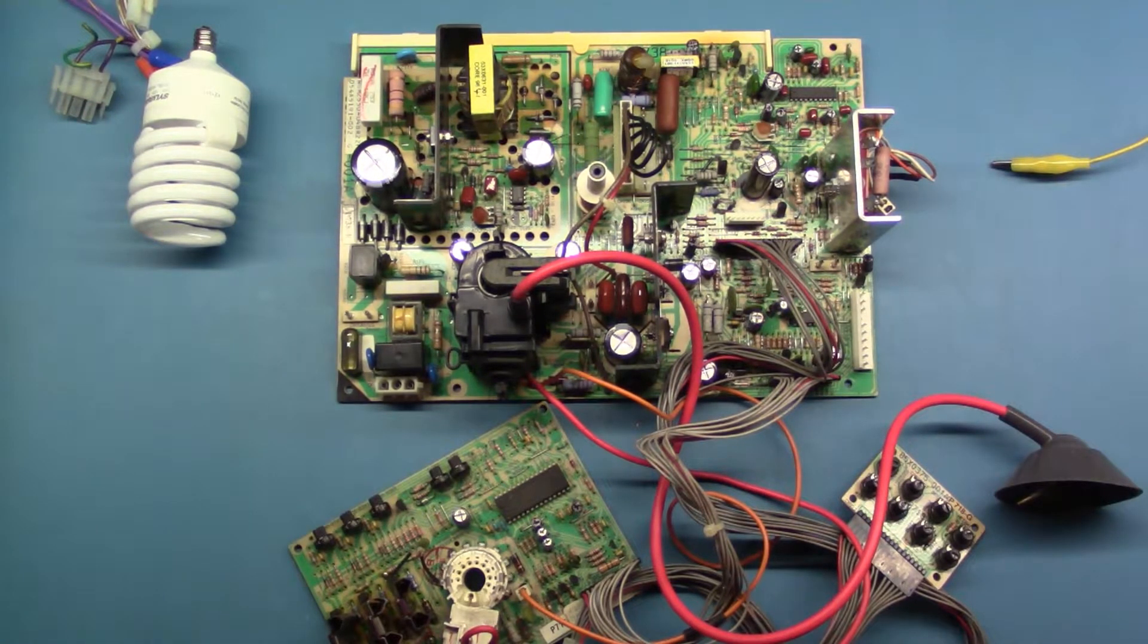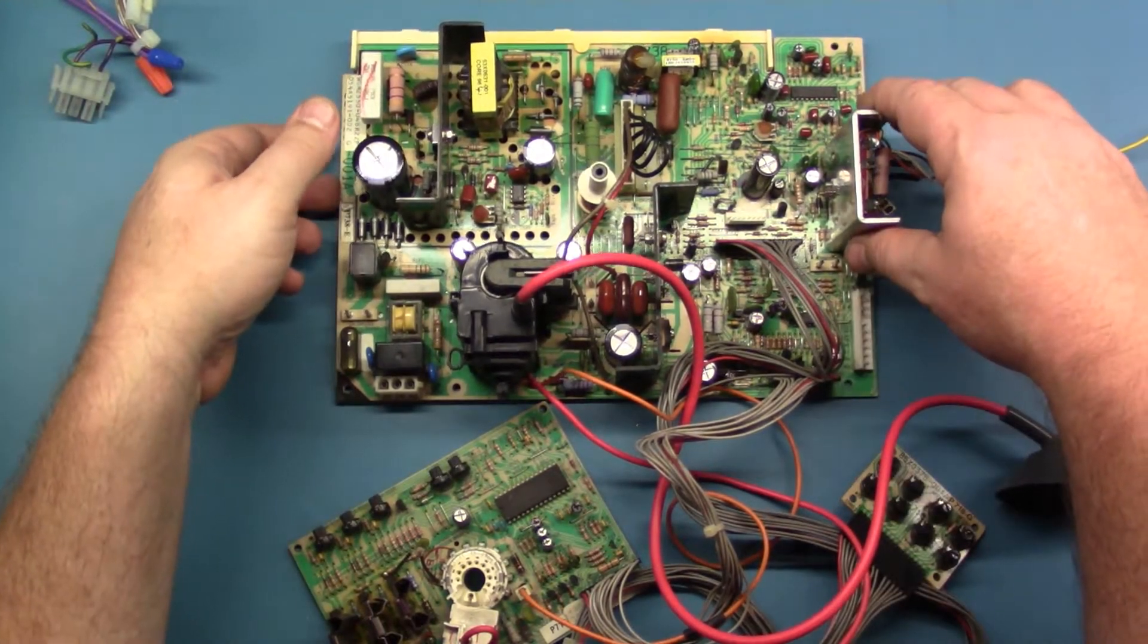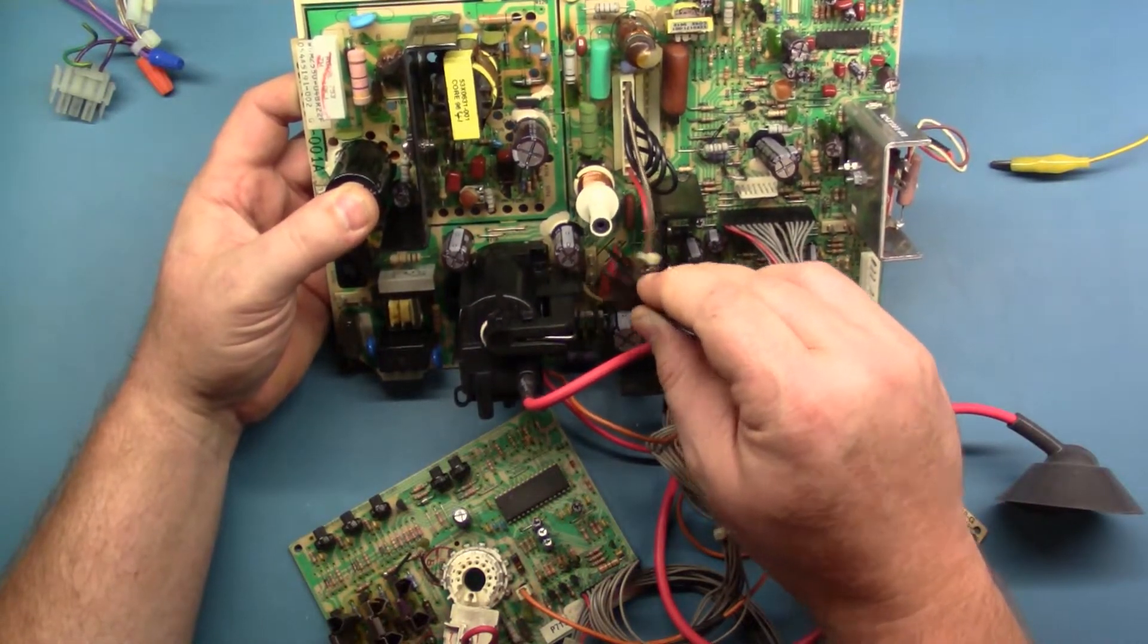What was I saying? Oh, B+. So on the U5000, the B+ test point is actually here by C107.